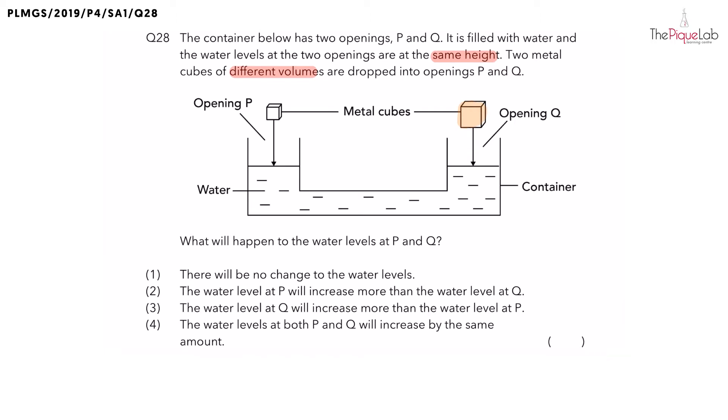So, what shall you expect to see happen to the water levels at P and Q? I know what some of you are thinking. You would tell me that since the metal cube dropped at opening Q is bigger, this means the water level at opening Q will rise higher than the water level in opening P. So, because of that, you would choose your answer as option 3.